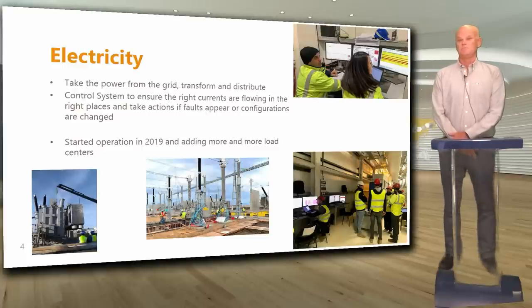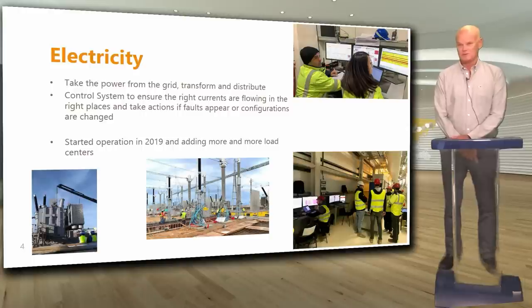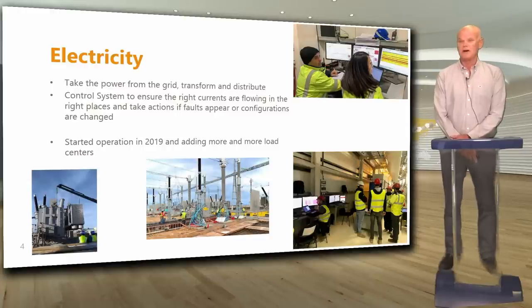First system: electricity. Everyone needs electricity. We need to take power from the grid and transform and distribute it on the platform. The control system ensures the right currents are flowing in the right place and takes action if faults appear or configurations are changed. This system started operation in 2019 and is continuously adding more load centers. The pictures show high voltage transformers and cables during construction, and some early commissioning activities.